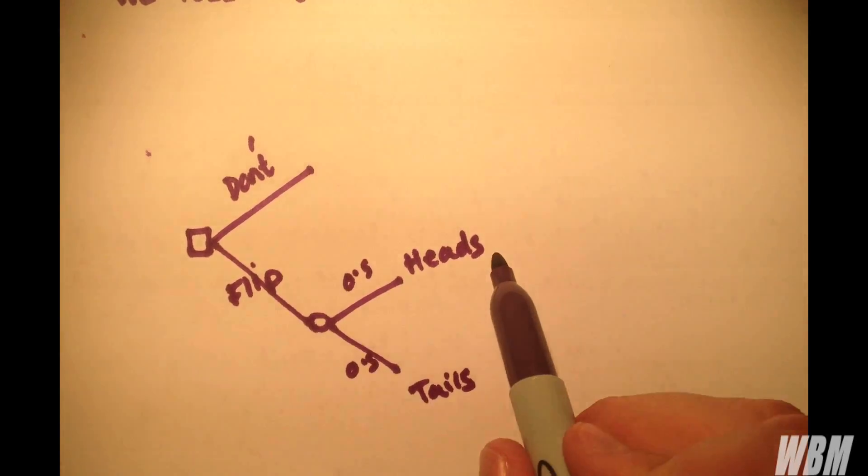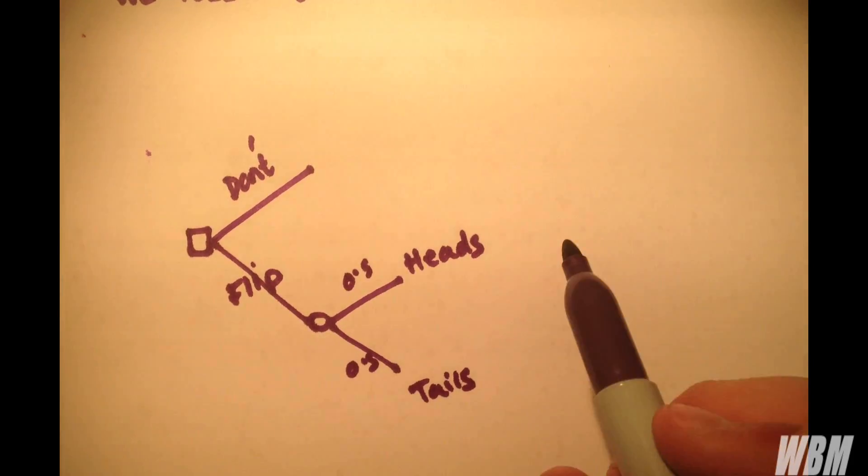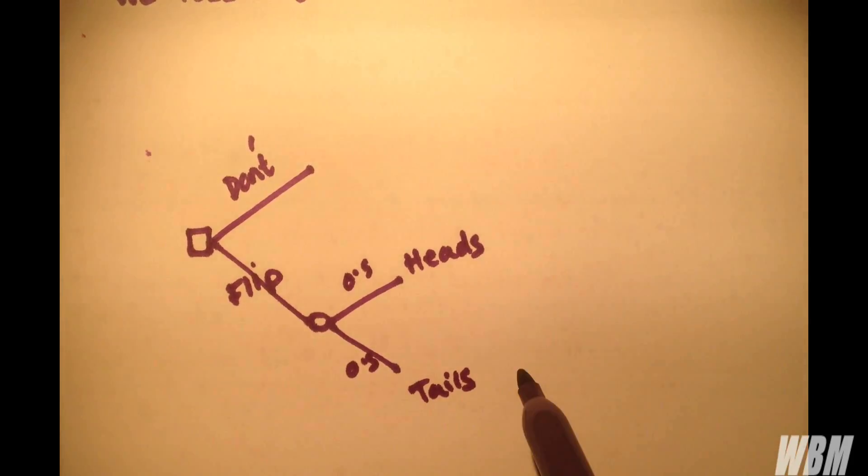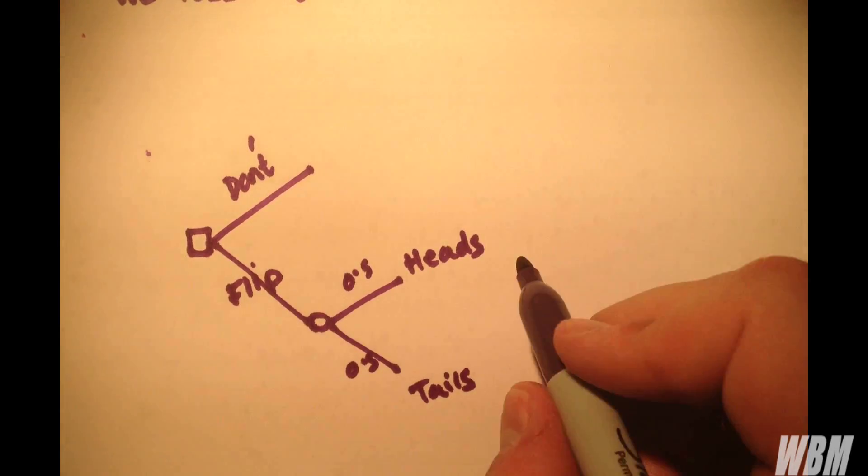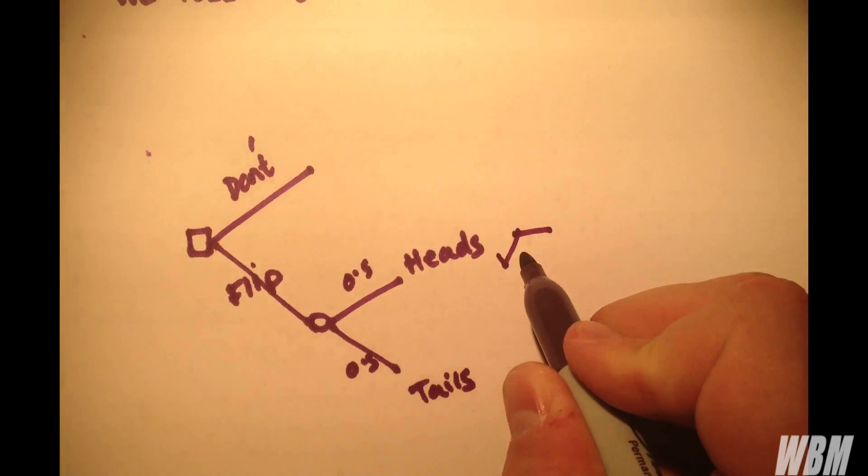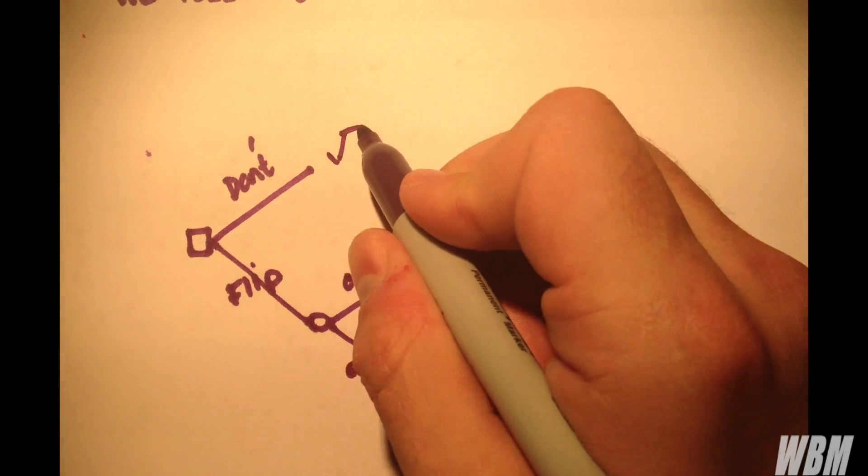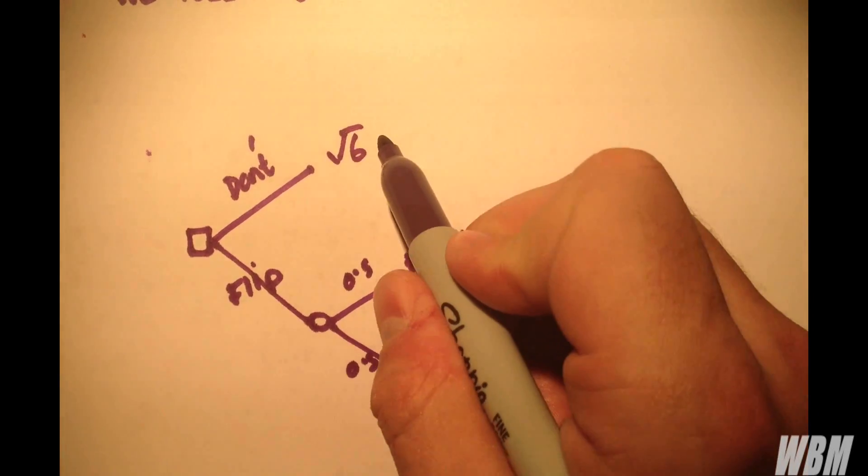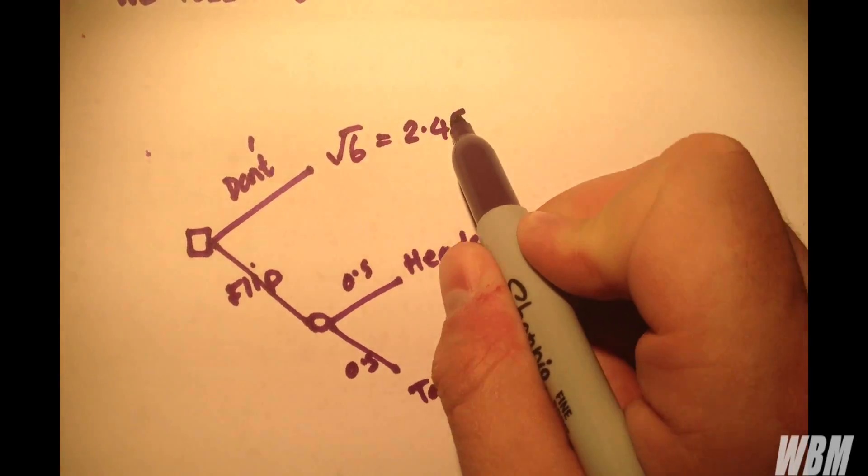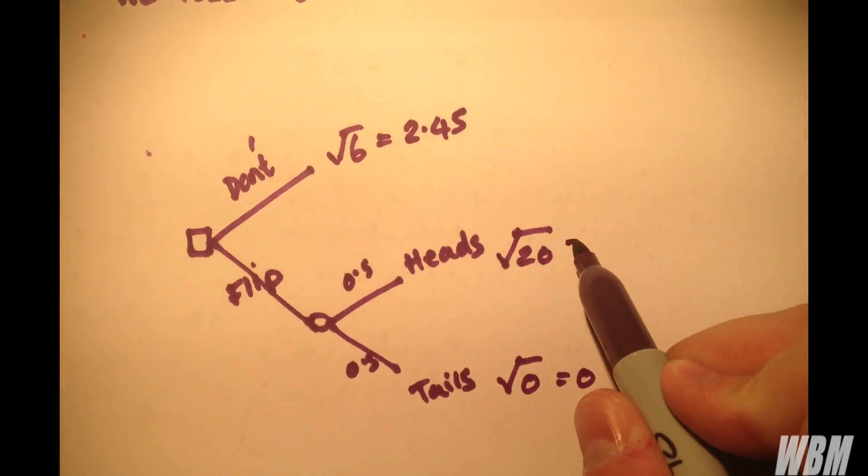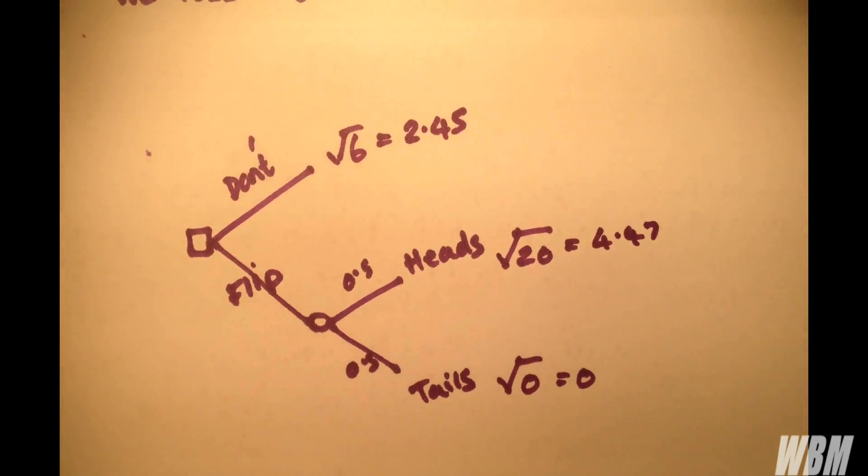Now instead of writing down the outcome of 20, 0 and 6, if we use a risk-averse function and instead we consider root 20, root 0, which is of course 0 and root 6, we have 2.45, 4.47 and of course 0.